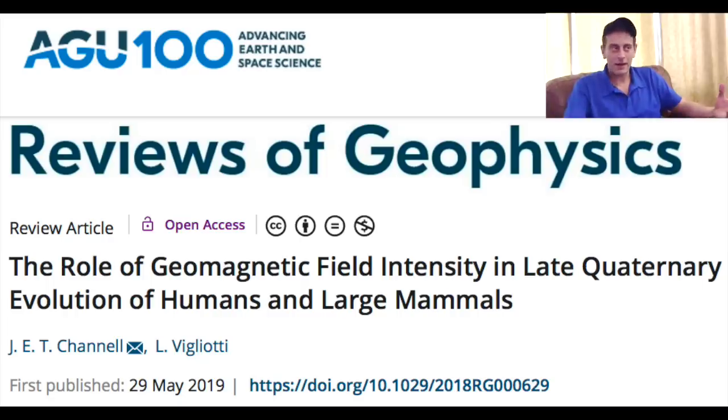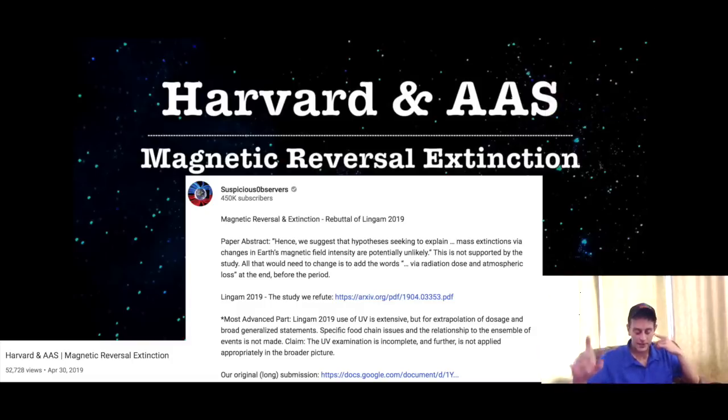For those who this video is really meant for, the number one geophysics journal in the world is Reviews of Geophysics. Earlier this year—and we actually interviewed one of the authors, Dr. James Channell—essentially, just looking at the ultraviolet exposure of the surface due to ozone depletion and due to the loss of magnetic strength in Earth's dynamo, life on Earth is subject to considerable risk. In fact, this paper was talking about how this was probably able to do in the Neanderthals all by itself.